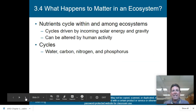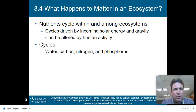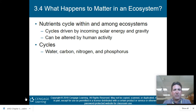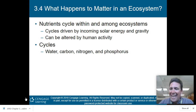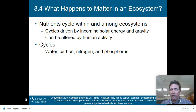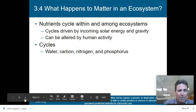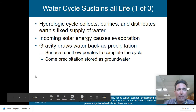Now, what happens to matter in an ecosystem? Nutrients cycle within and among ecosystems. These cycles are driven by incoming solar energy and gravity, and can be altered by human activity. The four main cycles we'll discuss are the water cycle, the carbon cycle, the nitrogen cycle, and the phosphorus cycle.